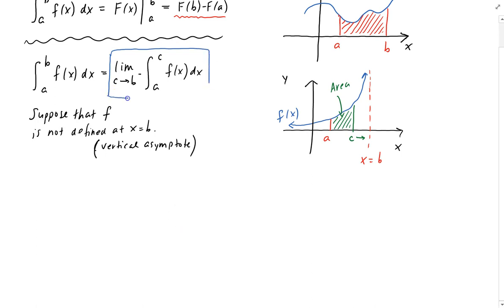We're going to do some examples of this. We evaluate the integral and then take the limit as C approaches B from the left. In this case, it will either diverge or converge — and that will depend on the function.